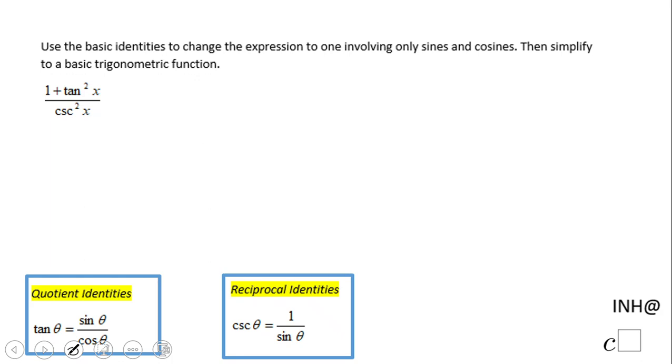Welcome back to iNeedHelpWithC². In this example, we're going to simplify a trigonometric expression using only sine and cosine. In other words, we have tangent and cosecant in this trigonometric expression, so we're going to change them into sines and cosines.